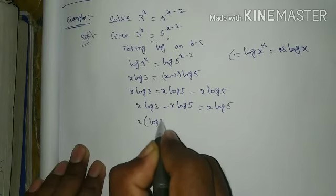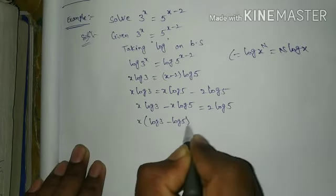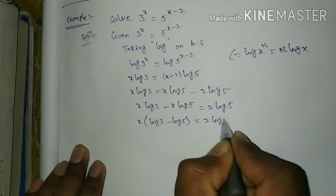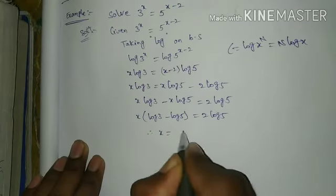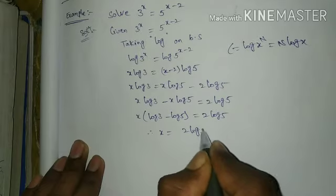x common here: log 3 minus log 5 equal to log 5. Therefore x equal to log 5.